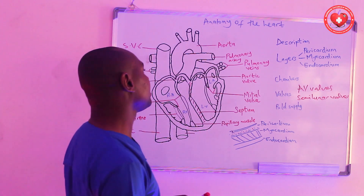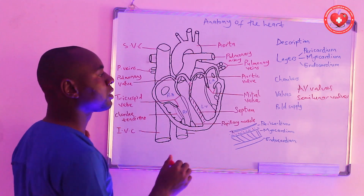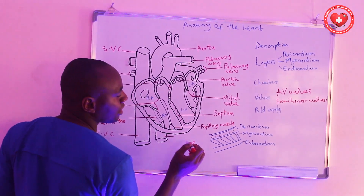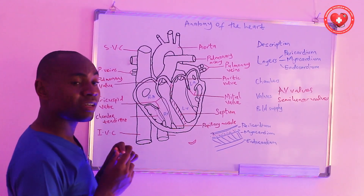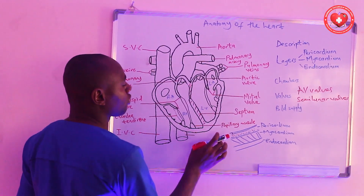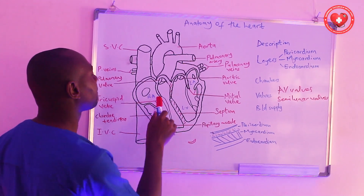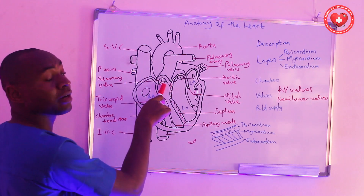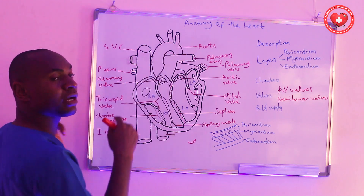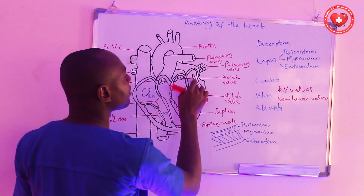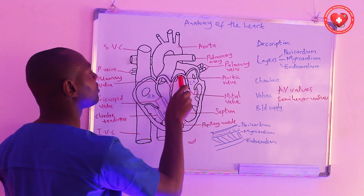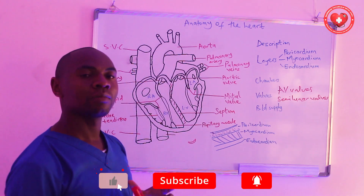The semilunar valves are called semilunar because their inner portion looks like a half moon — semi means half and lunar means moon. There are half-moon structures located in those valves. To the right, we have the pulmonary valve, which controls the movement of blood to the pulmonary artery. We also have the aortic valve, which controls the movement of blood into the aorta.